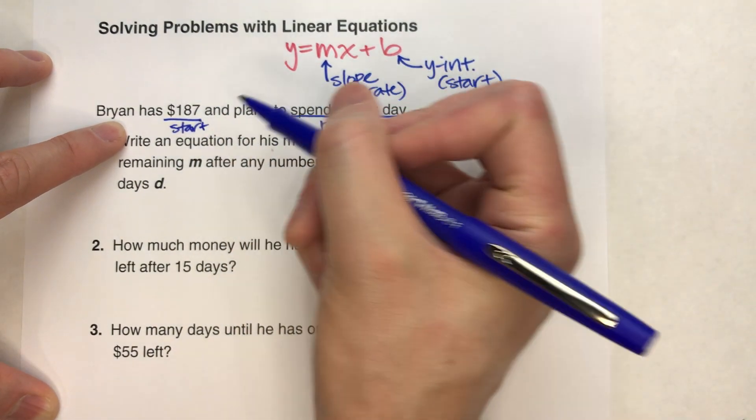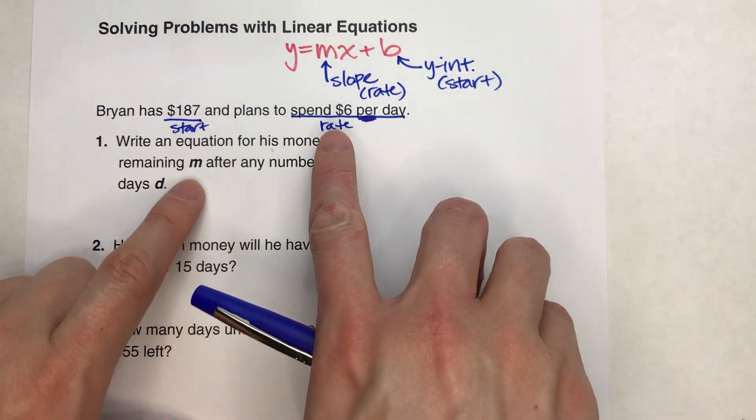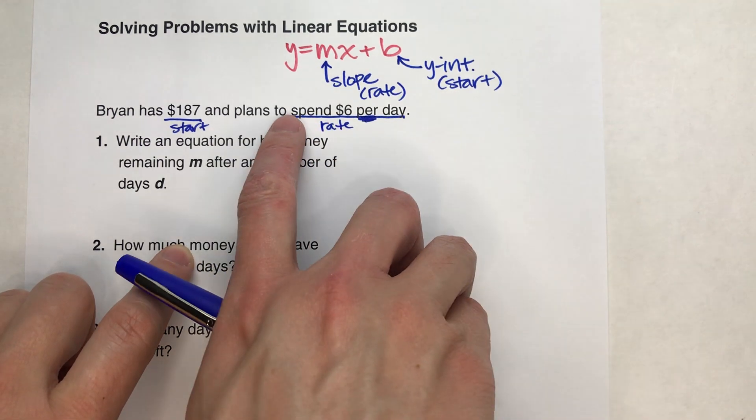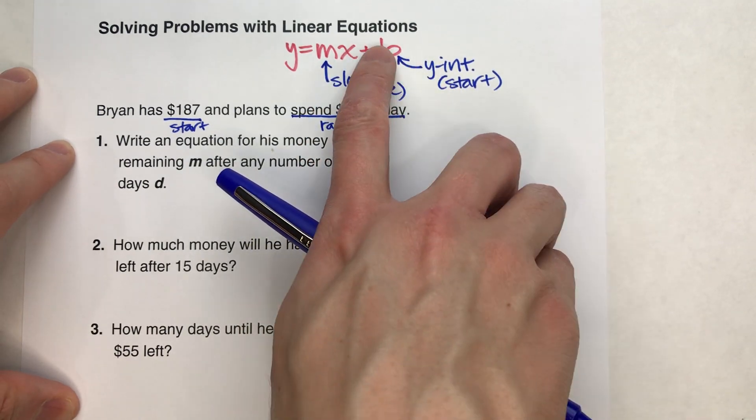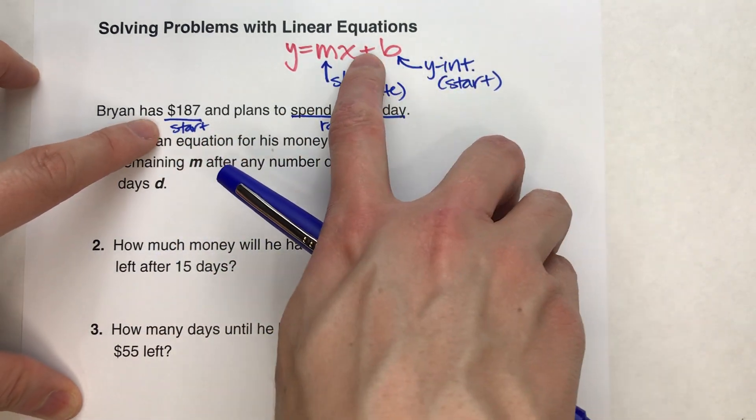So when we write our equation, we know the rate, that 6, or negative 6 because we're spending it, is going to go there next to our variable. And the y-intercept, the starting amount, is going to go on the end.